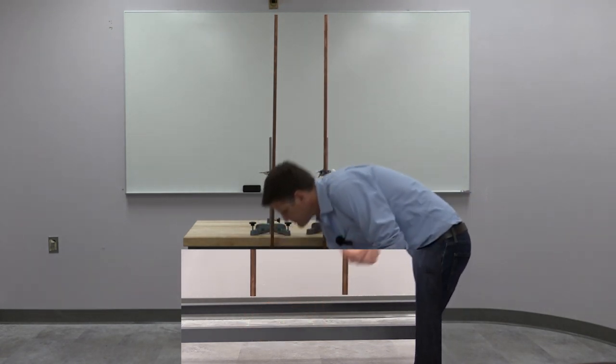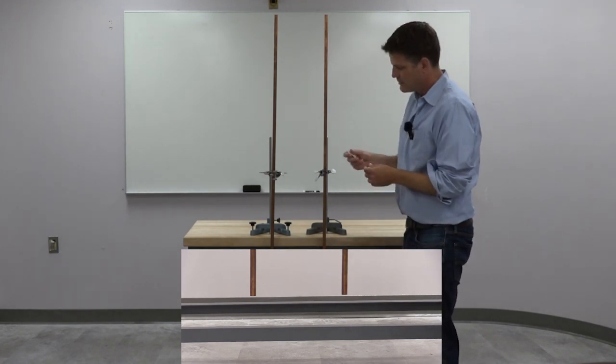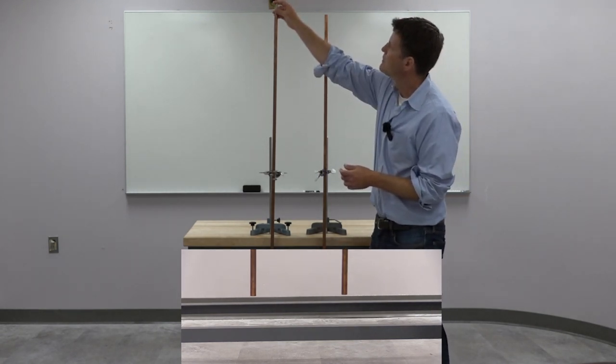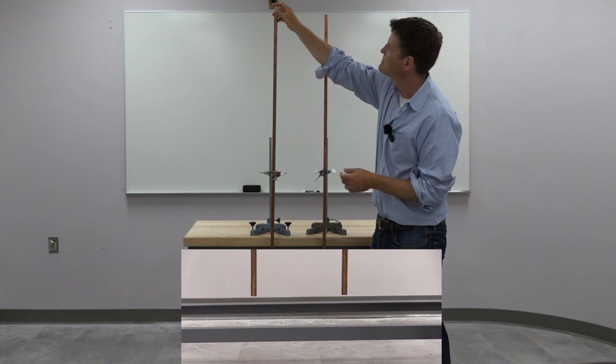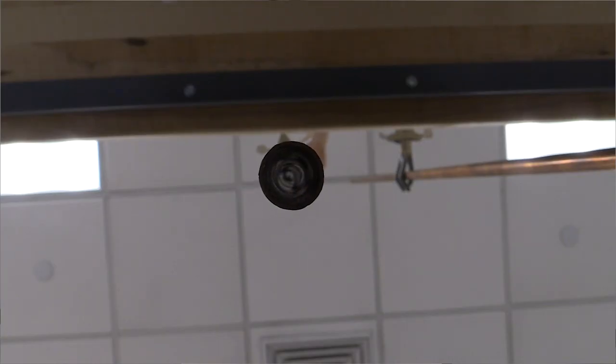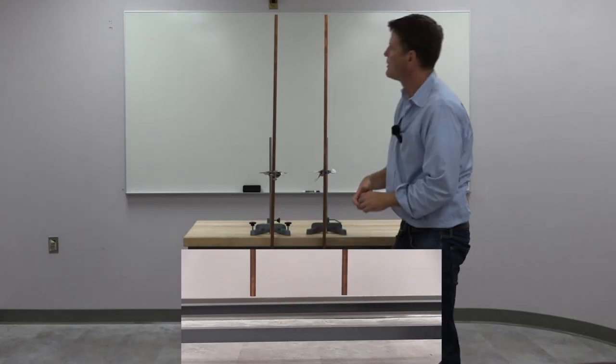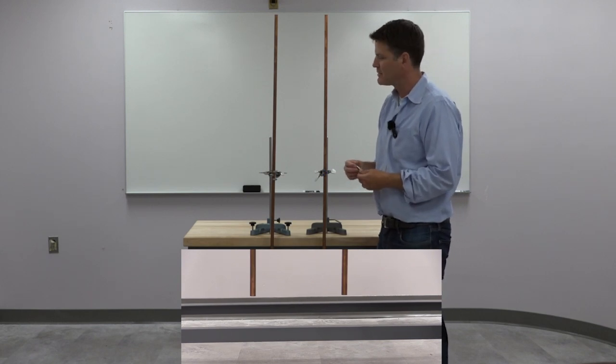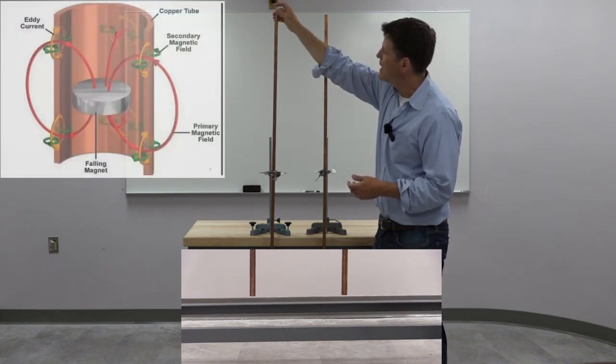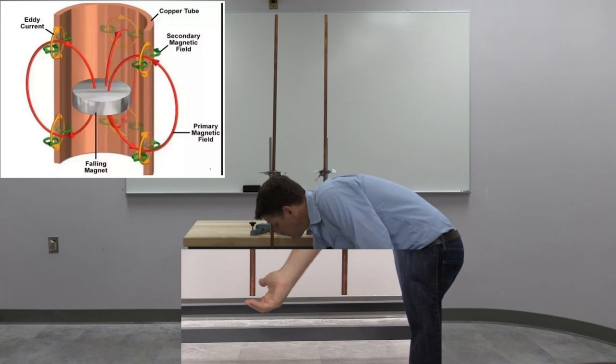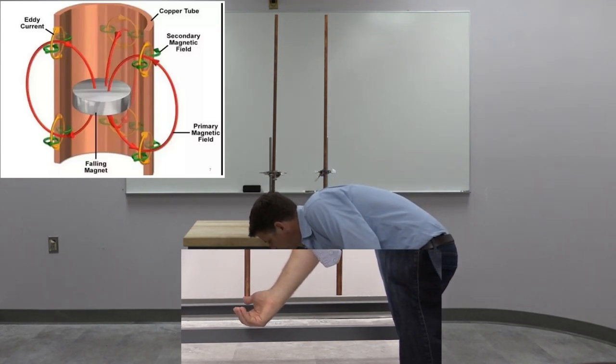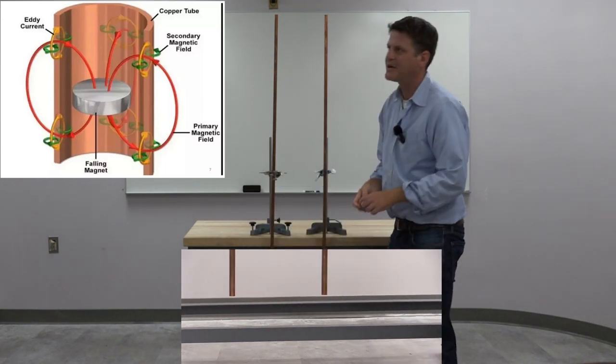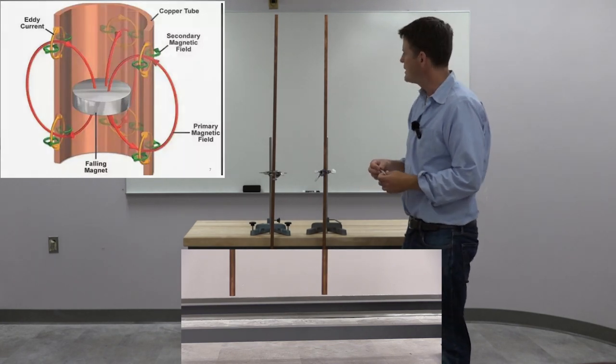And you can show that the back force on the magnet has to be proportional to the velocity of the magnet. So it's basically falling like it's in some big vat of maple syrup or something with a lot of drag slowing it down. And these are called eddy currents because the currents actually flow in circles around the moving magnet. And that's why they're called eddies.